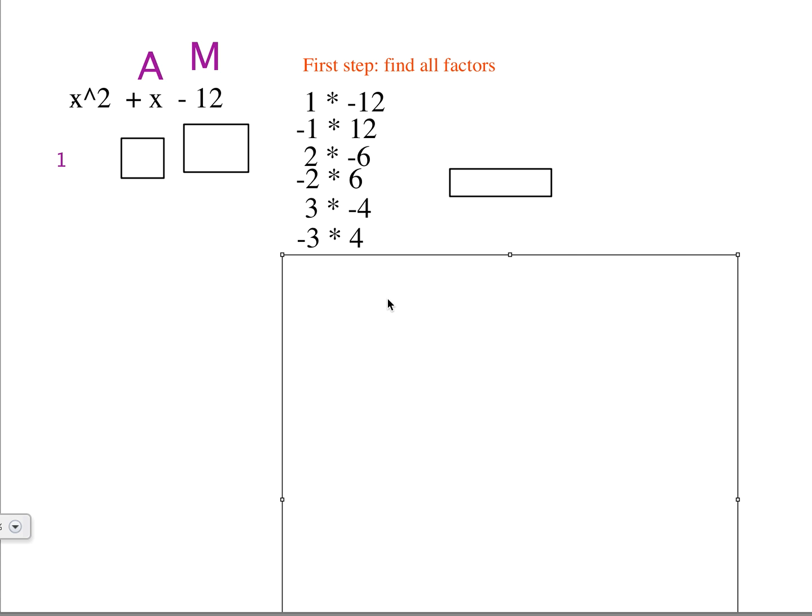So those are all the factors of negative 12 that multiply to that. Now you have to go through each of them and find which ones will also add to be the middle term.